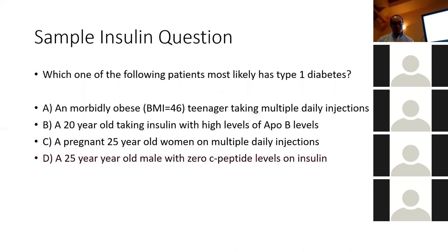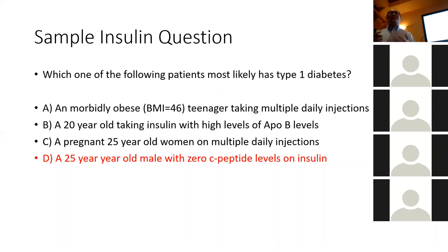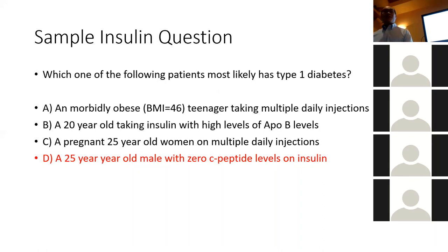The correct answer is D. Let's go through why each other is wrong. A is not likely because the patient is young and obese — but the question asks what's most likely. On the test you can't argue a 1% edge case; you have to go with the most likely answer. People with type 1 diabetes are usually quite thin because they don't have insulin resistance — they have a problem of insulin secretion, not weight-associated resistance.